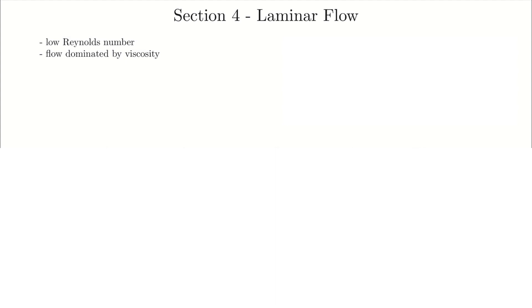Let's kick off section four with a quick reminder of what laminar flow is — this should be a review from what you would have covered in your undergraduate fluid mechanics. We experience laminar flow at low Reynolds numbers. I'll write out the Reynolds number here, where v is velocity, d is the tube diameter, and nu is the kinematic viscosity. Just a reminder that nu is really mu over rho.